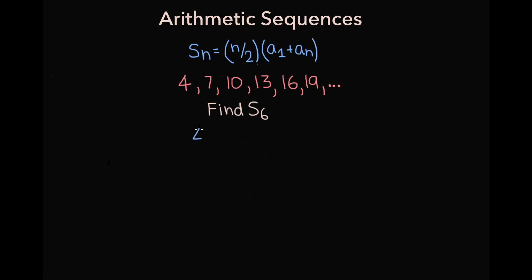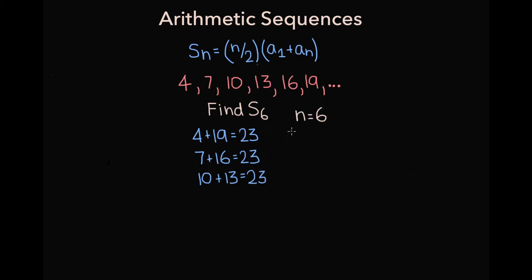Notice that the first and sixth terms sum to 23, as do the second and fifth terms and the third and fourth terms. With n equal to 6, we have 3 — or 6 over 2 — pairs of terms that each sum to 23, which is a1 plus a6. So the sum of the first six terms is 69.